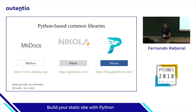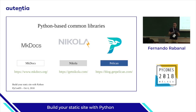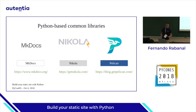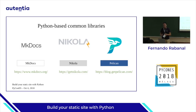And Nikola and Pelican are very similar — they could be used for blogs, they could be used for static sites, they could be used for many different types of websites. But in these two cases, you have extensions and a very customizable way of doing your static site. It's not just placing your documentation and rendering a website.